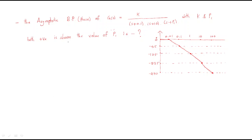Hello everyone. In this session we will discuss some more problems regarding the Bode plot. The problem involves the asymptotic Bode plot — asymptotic means approximate, similar to the original. The phase plot of G(s) = K / [s(s+0.1)(s+10)(s+P1)] is shown, where K and P1 are both unknown positive values.